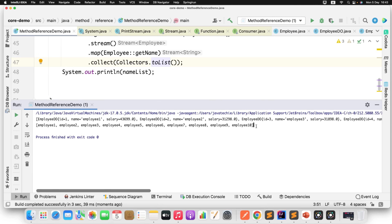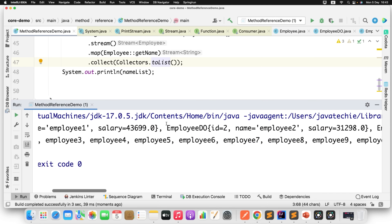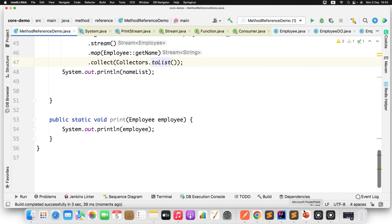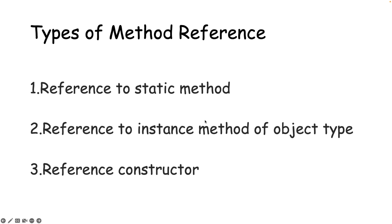Running this gives us all 10 employee names — employee 1 through employee 10. So we understand static method reference, instance method reference of object type, and now the last type is constructor reference.